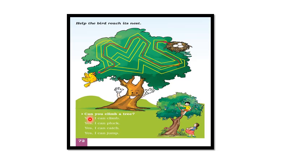And now we can read the sentence. Can you climb a tree? Children, I cannot climb a tree. If you can climb a tree, you can say, 'Yes, I can climb.' And can you pluck any flowers or fruits? Yes, I can pluck.